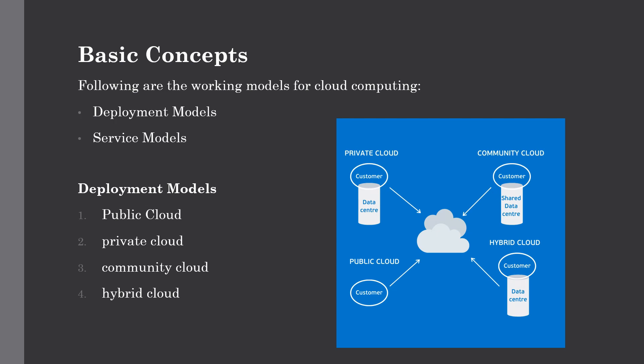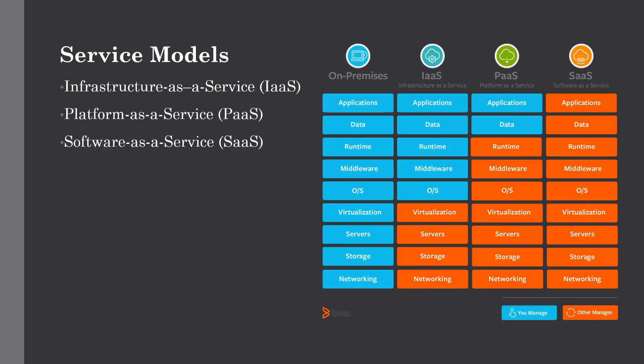Now let's talk about service models. Cloud computing is based on service models, which are categorized into three types: Infrastructure as a Service (IaaS), Platform as a Service (PaaS), and Software as a Service (SaaS).